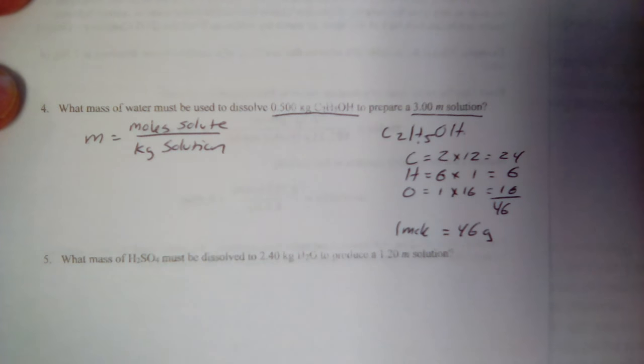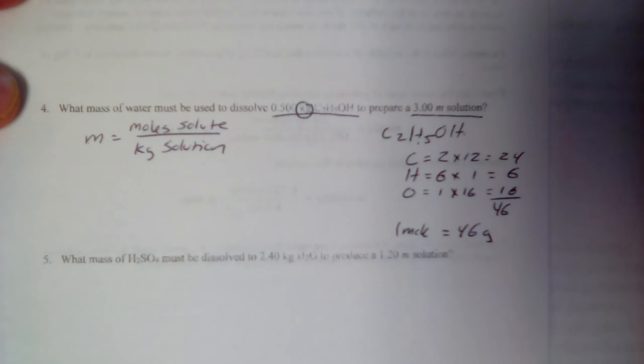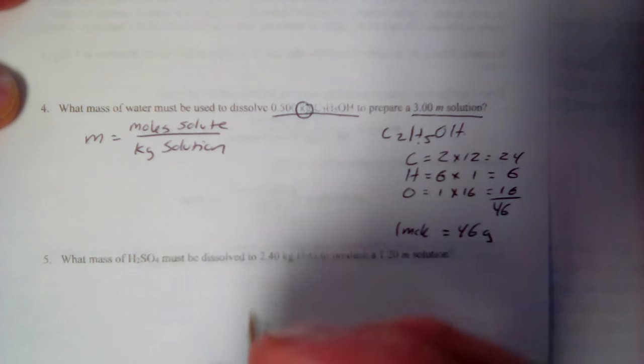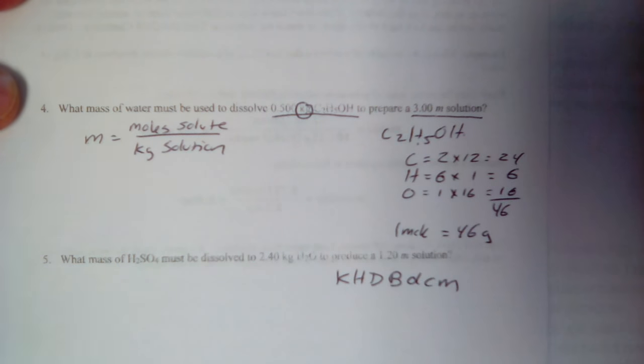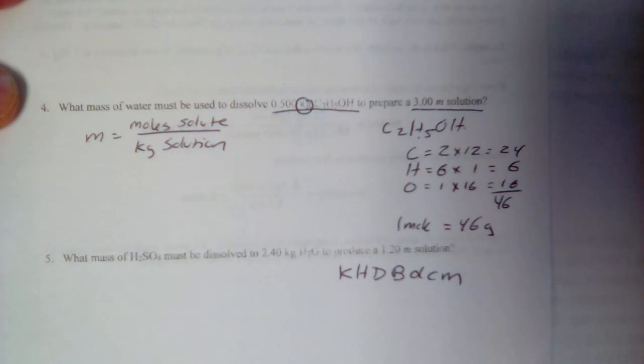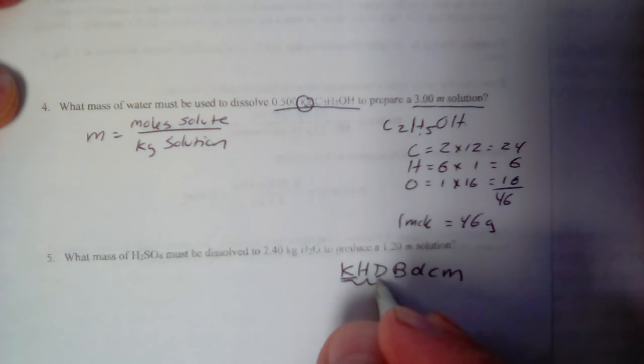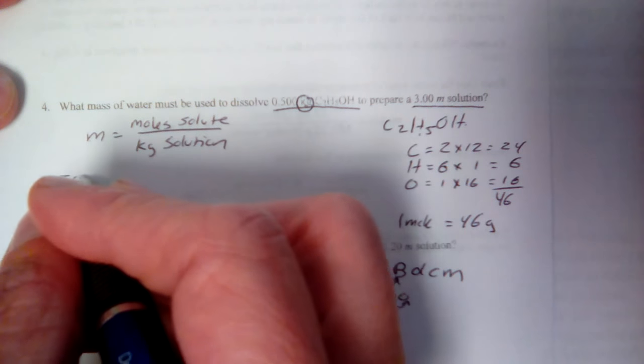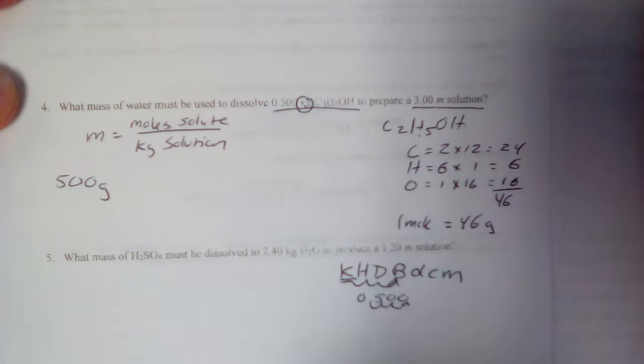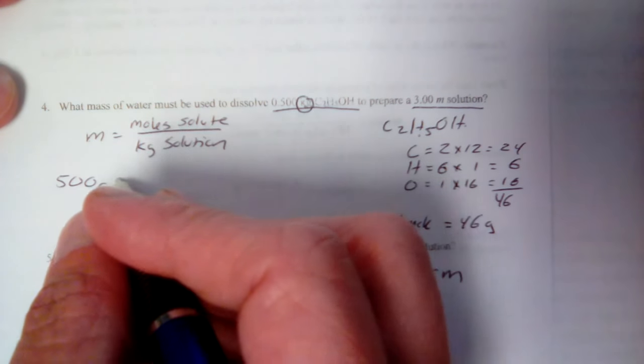First conversion is not a mole mass conversion. First conversion is to change those kilograms into grams. So back to King Henry died by drinking chocolate milk. Kilo, hecto, deca, base, deci, centi, milli. King Henry died by drinking chocolate milk. Now, I'm at kilo. I need to get it to grams so I can work with this. One, two, three places over to the right. So I'm going to use 500 grams. 500 grams of that, C2H5OH. It's an alcohol. That one is ethanol.